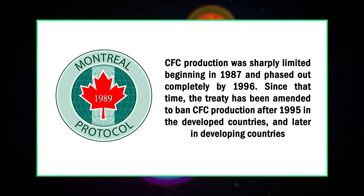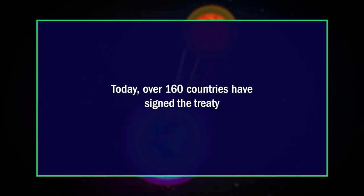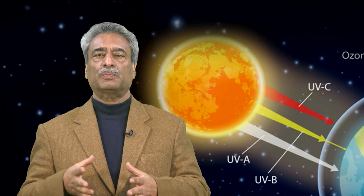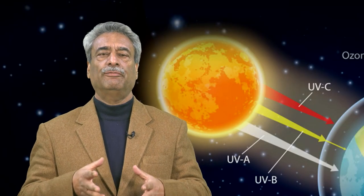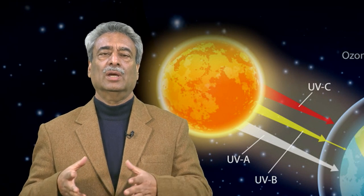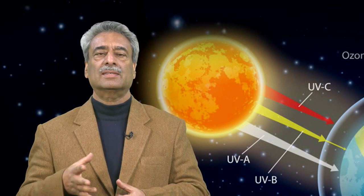After negotiation of an international treaty called the Montreal Protocol, CFC production was sharply limited beginning in 1987 and phased out completely in 1996. The treaty has since been amended to ban CFC production after 1995 in developed countries and later in developing countries. Today, over 160 countries have signed the treaty. This production phase-out has been possible because of efforts to ensure substitute chemicals and technologies for all CFC uses.